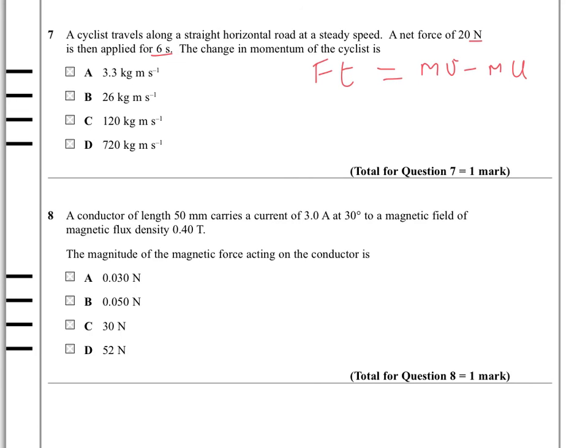So 20 times 6 is 120 kilogram meter per second, and so that's answer C. So we're saying here the change of momentum has the same value as the impulse, so we find the change of momentum here by looking at the value of the F times T.